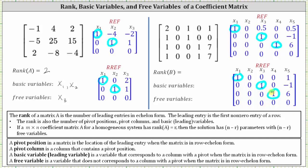Because we have three leading entries, the rank of matrix B is three. Column one, column three, and column four are pivot columns, and therefore the basic variables are x sub one, x sub three, and x sub four. The remaining variables, x sub two and x sub five, are the free variables.